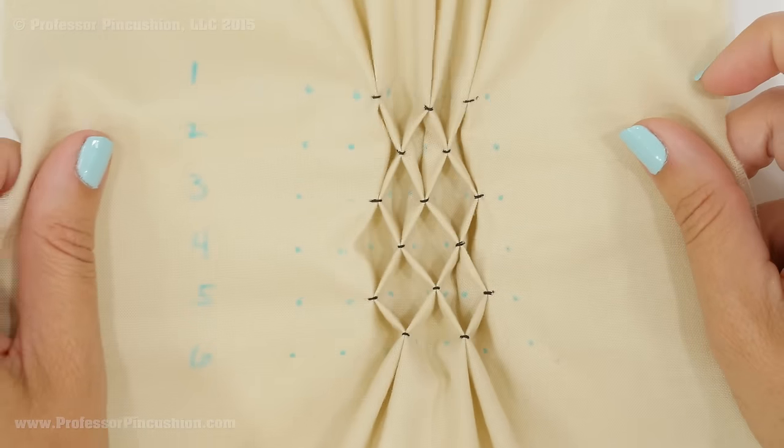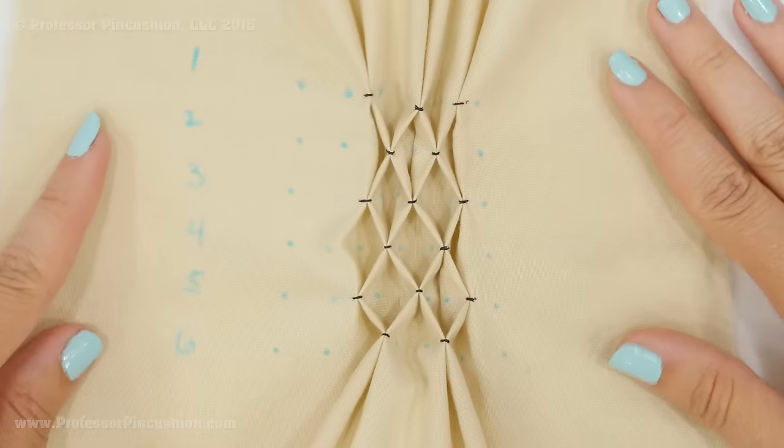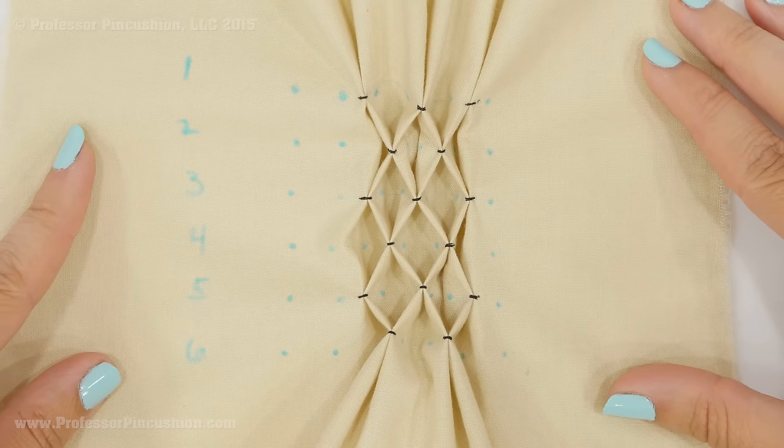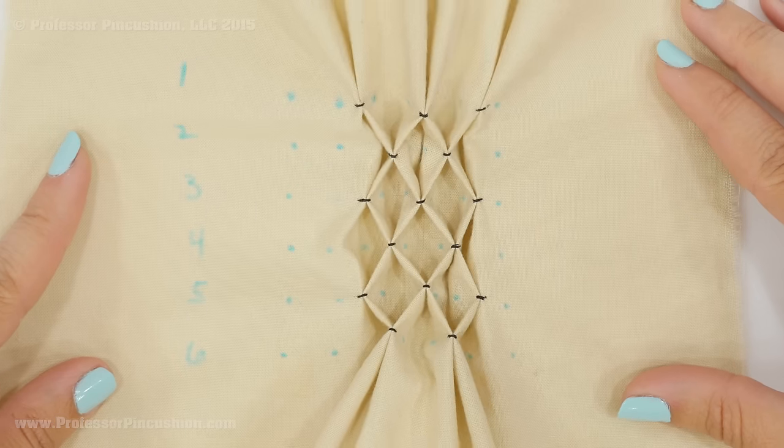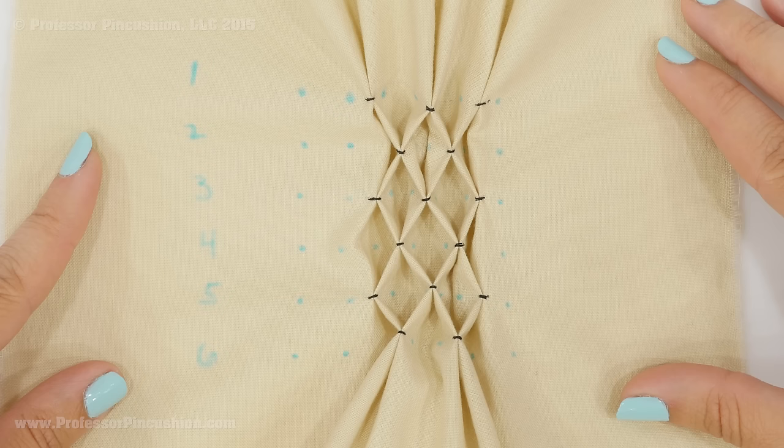You also notice that it does have a little bit of a stretch. So this is probably why it was popular in the olden days, such as Renaissance time, when they didn't have elastic, and they could create clothes that have more of a fitted look. So that's how you do a honeycomb smock.